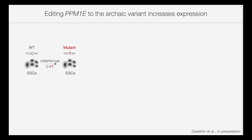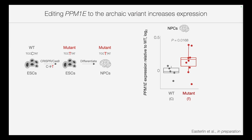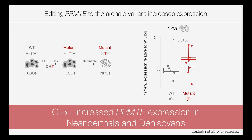To test this, we took embryonic stem cells from modern humans and used CRISPR to edit this position to the archaic version — neonatalize these cells at that position. We then differentiated these cells into neural progenitor cells and checked for differences in expression between the edited and unedited versions. Indeed, we see a significant difference: when we edit this position to the archaic human variant, it significantly increases the expression of PPM1E, suggesting that this C-to-T transition increased PPM1E expression in Neanderthals and Denisovans.